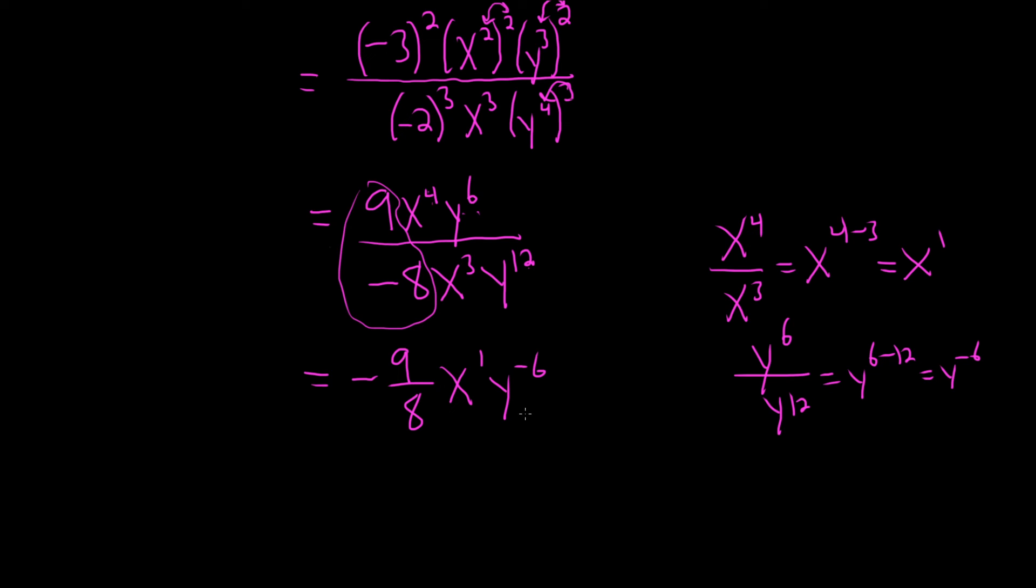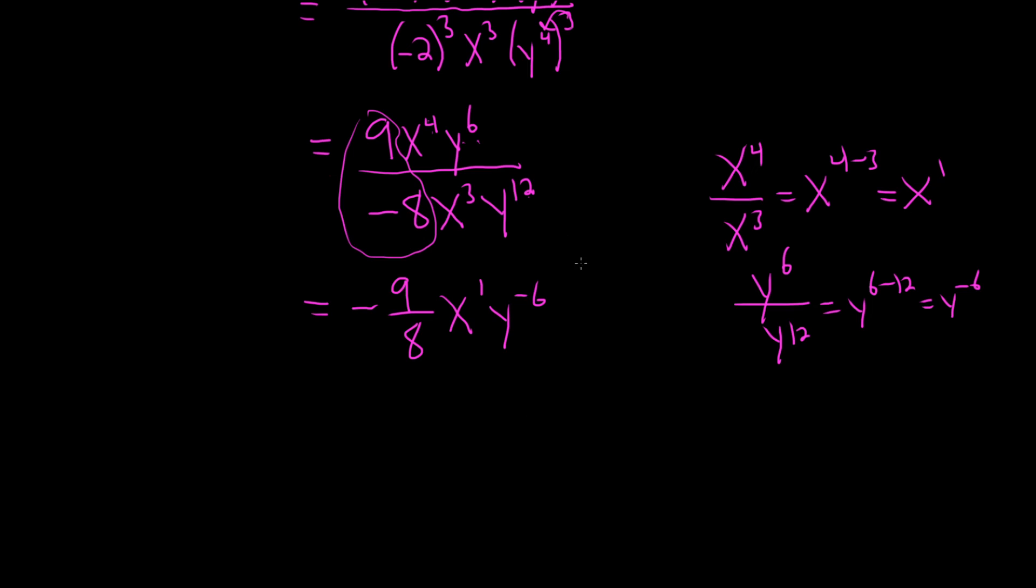Okay, the question said to write everything with positive exponents. So what we can do now is we can bring this piece downstairs, and that will make the exponent positive. So this is negative 9 eighths x over y to the 6th.